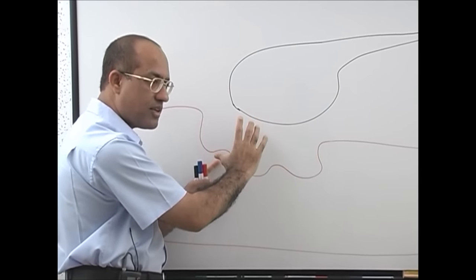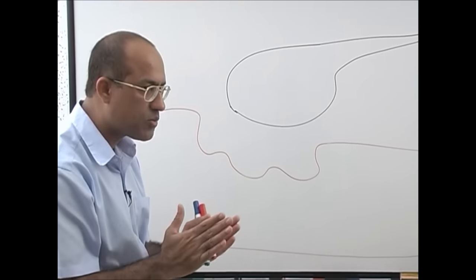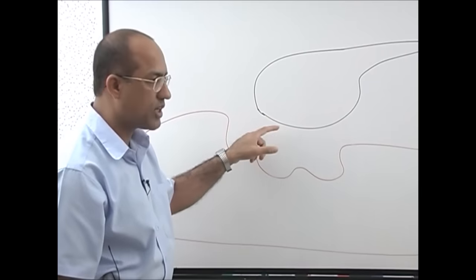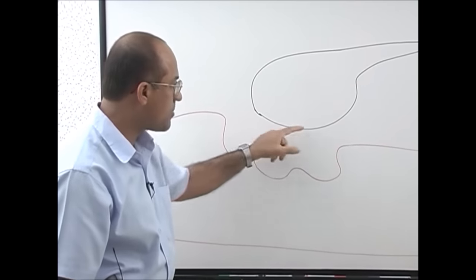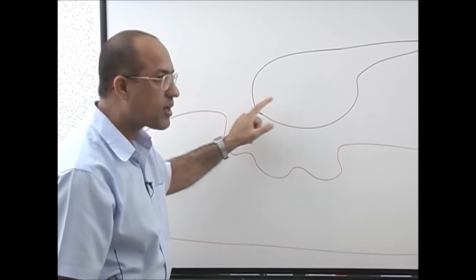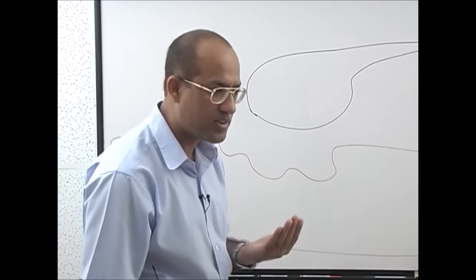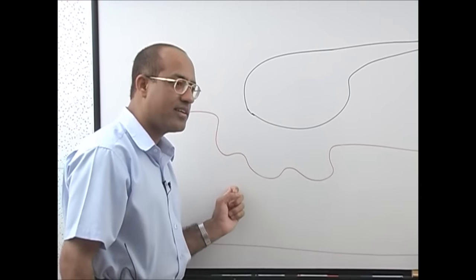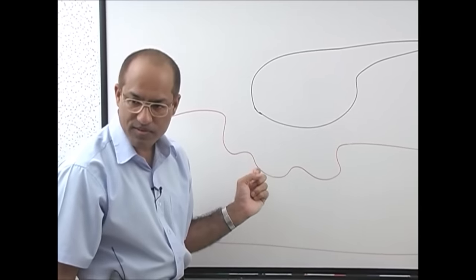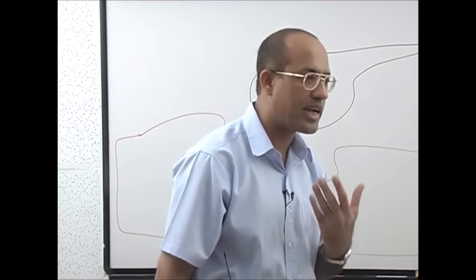A synapse is the meeting point of the membranes of two cells where information can be transferred from one cell to the next. At the neuromuscular junction, a synapse is made between the neuronal membrane and the muscular membrane. Because information passes through a chemical neurotransmitter, neuromuscular junctions are classified as chemical synapses — this is a classical case of chemical synaptic activity.